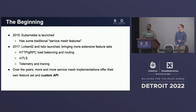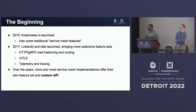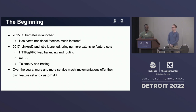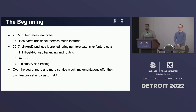Before we get into it, I want to give a very brief history of where we're coming from to give some more context on where we're going. In the beginning, Kubernetes was launched. It had some service mesh features — the Service resource gives you some amount of functionality — but not all the rich functionality that we want out of a service mesh today.